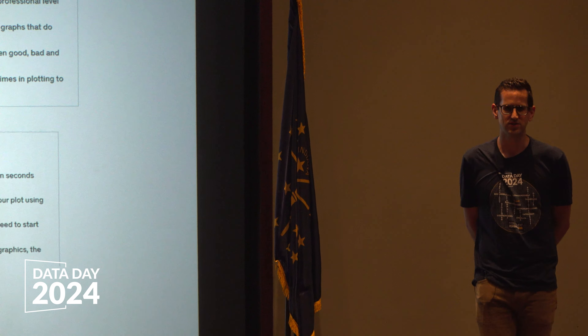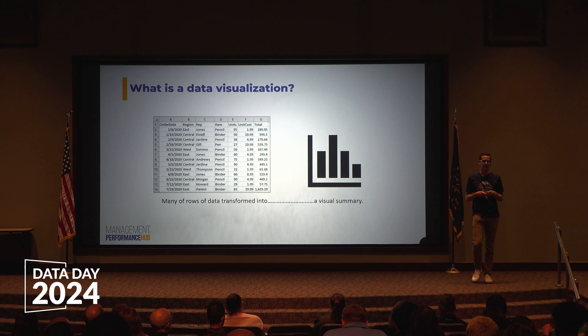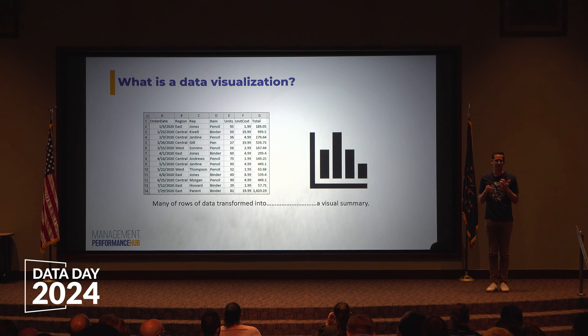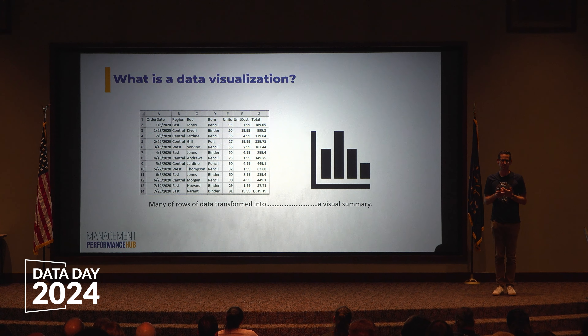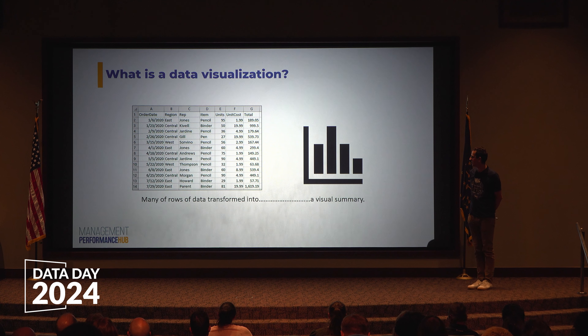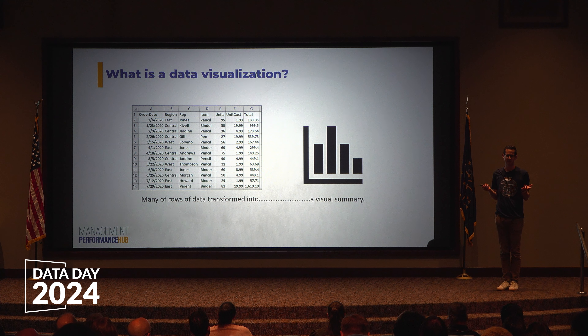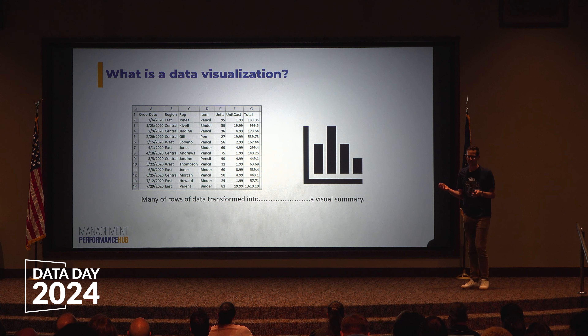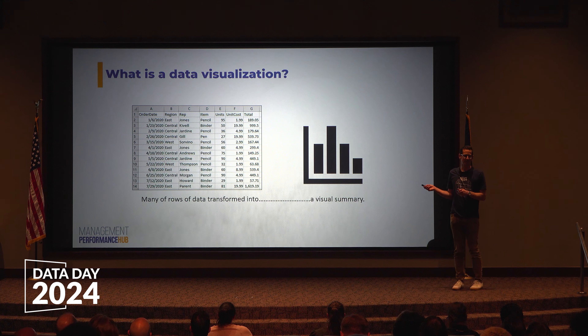Before we get started, let's think broadly about data visualization. What is a data visualization? At a really simple level, it's a visual summary of many, many rows of data — could be a few thousand, a few million, a few billion rows. You can see here, if we look at this sales data for various office supplies, it would take a long time to decide which one had the highest sales from a spreadsheet. But if we turn that into a bar chart, we can tell which one had the highest sales very quickly. So a data visualization is a visual summary.